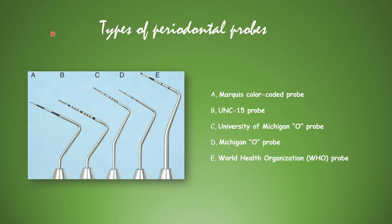There are various types of periodontal probes: the Marquis color-coded probe, the UNC-15 probe, the University of Michigan-O probe, and the World Health Organization (WHO) probe. The WHO probe is mostly used for measuring pocket depths.